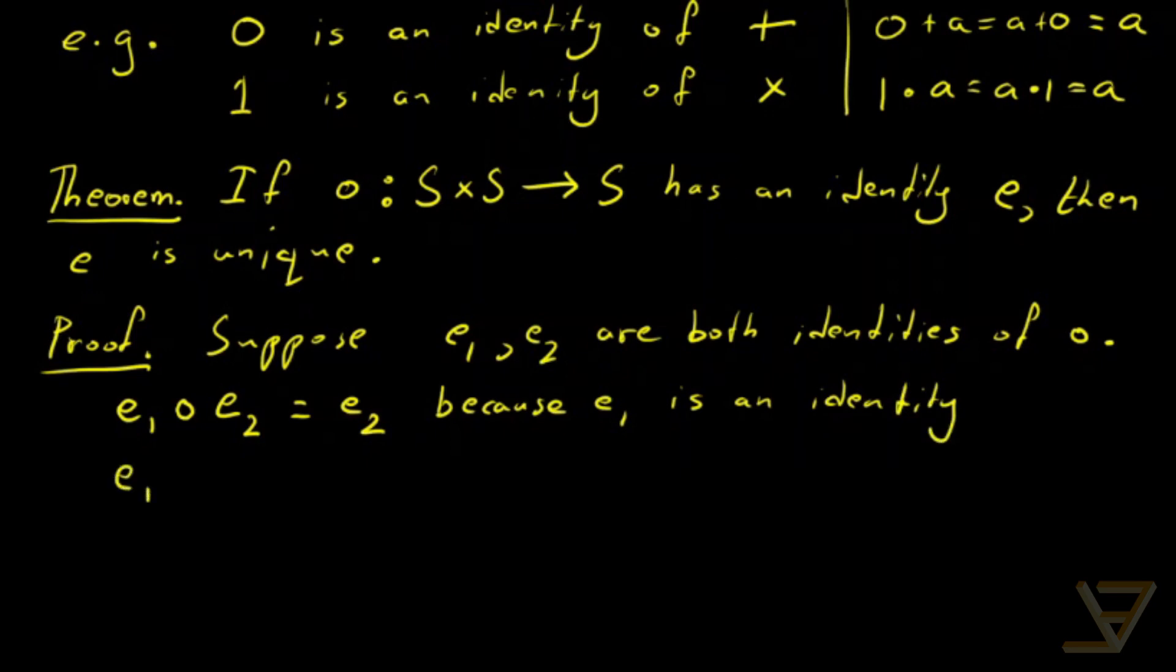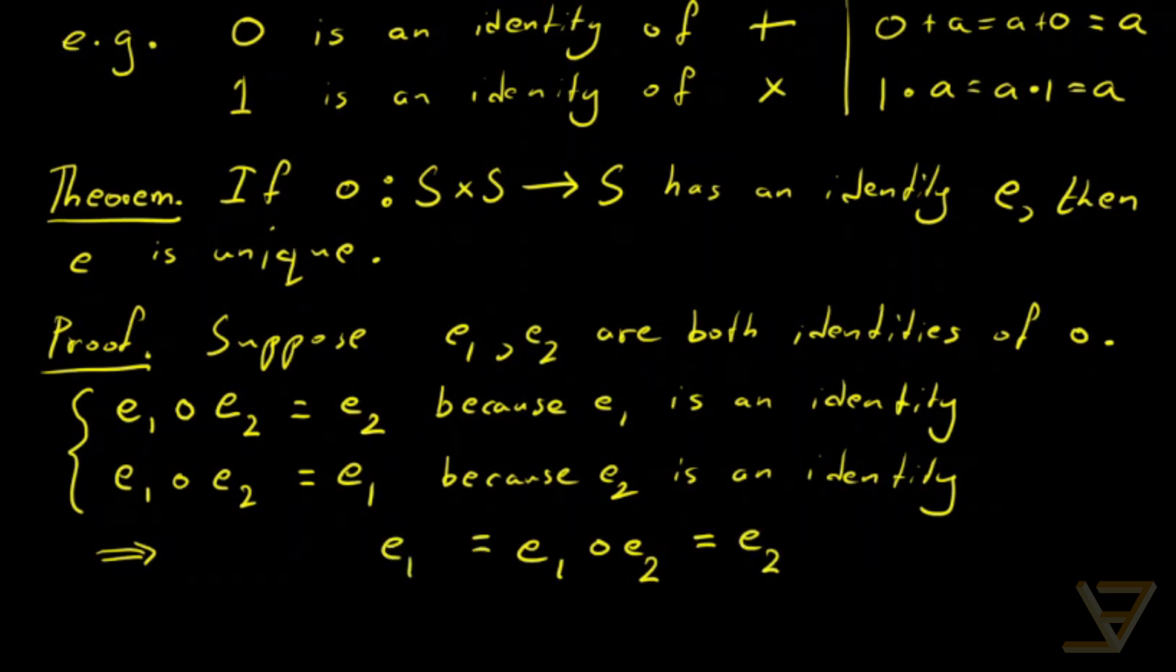And secondly, we'll do the same thing, but we'll use a different property. So because e2 is an identity, we get that e1 composed with e2 is equal to e1. So what this means is that if we take e1 composed with e2, it's equal to e2, but it's also equal to e1. And that means e1 equals e2. This proves that the identity must be unique. So if we just happen to have two identities, they're the same element of S.